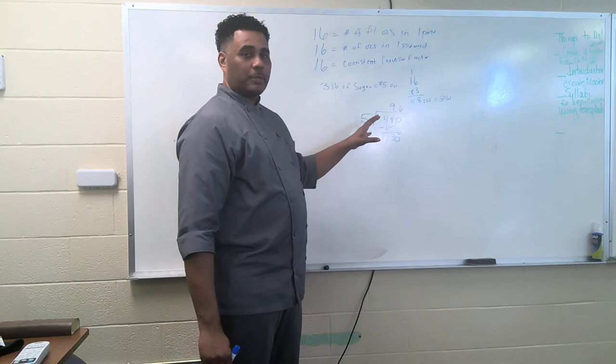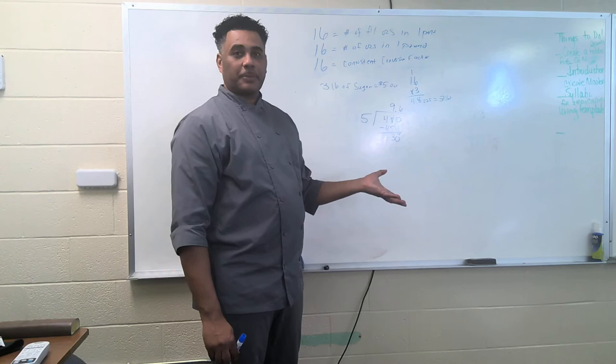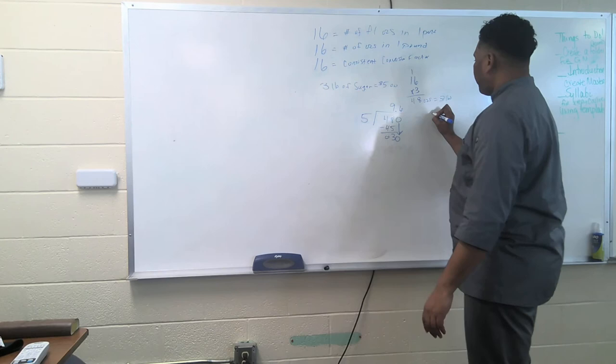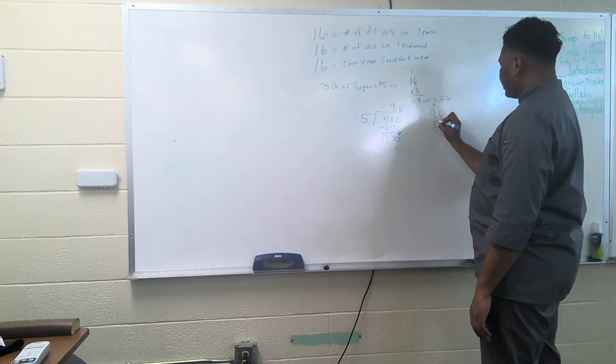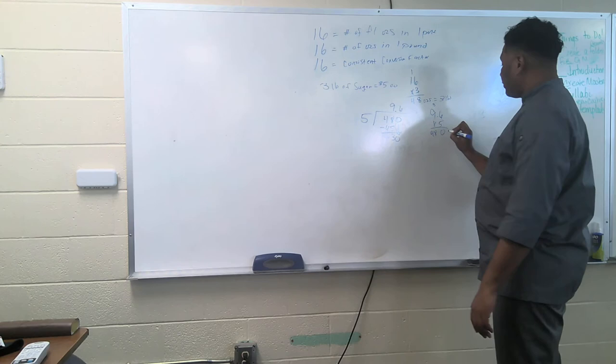Of course, this is an old way, but it's still very effective. This is a division problem. So the way you're going to check your division answer is to invert it into multiplication to check to see that the numbers line up. So we're going to take the answer here, 9.6, and multiply it times five. Six times five is 30. We're going to express the zero and carry the three. Nine times five is 45, plus three is 48.